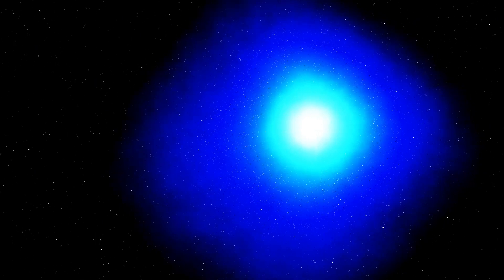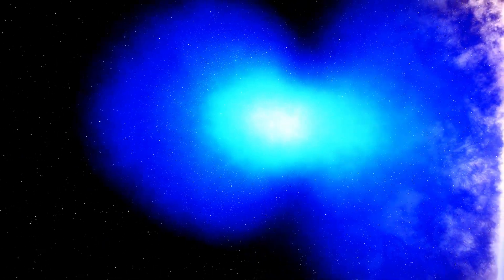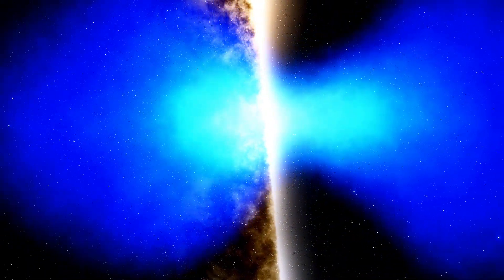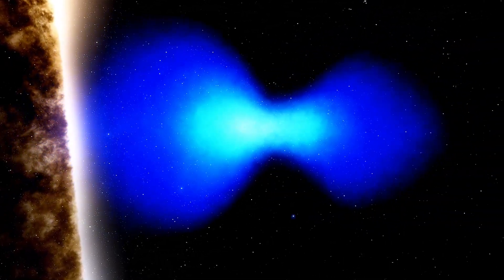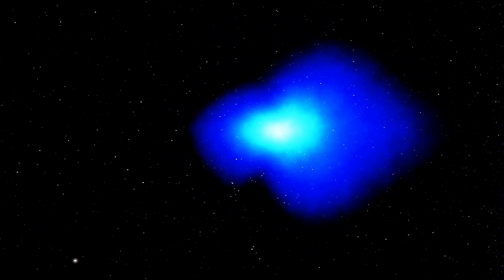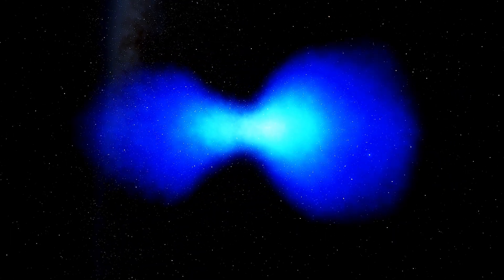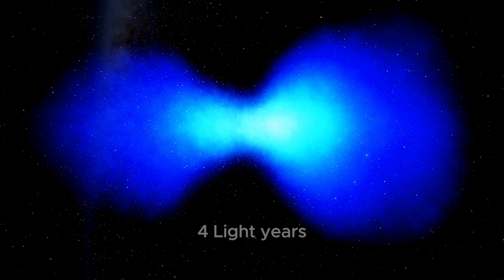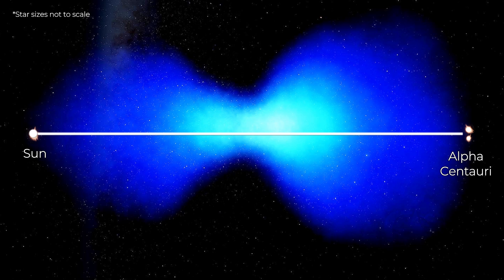The term planetary nebula, however, is misleading. It originated in the 1700s when early astronomers observed these celestial objects through primitive telescopes, noting their round, planet-like appearance. Over time, improved observations revealed their true nature, remnants of dying stars ejecting their outer layers in dramatic bursts. The Boomerang Nebula is immense, with its gaseous envelope stretching across a distance of four light-years, roughly 37 trillion kilometers. To put that into perspective, this is nearly the distance between our Sun and Alpha Centauri, the closest star system to Earth.